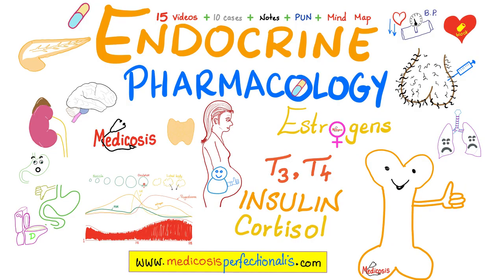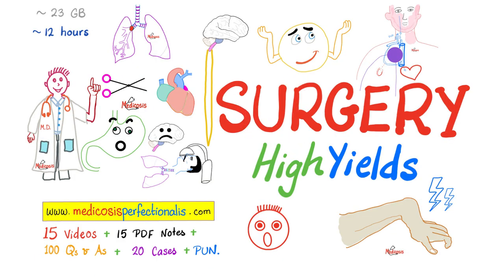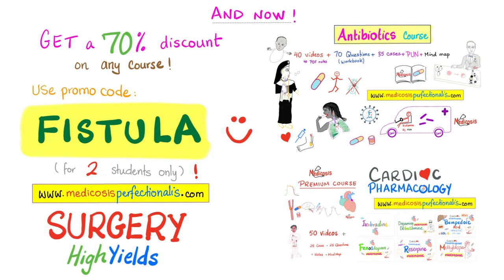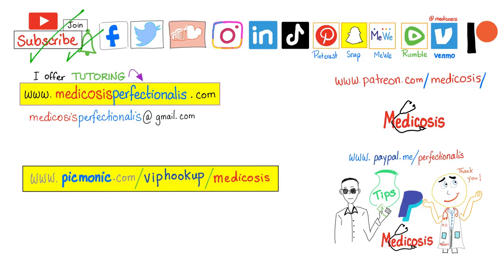Real estate agents say: location, location, location. But Metacosis says: integration, integration, integration. After understanding the physiology and biochemistry behind insulin, it's time to learn about insulin and oral glucose-lowering agents like metformin by downloading the endocrine pharmacology course at metacosisperfectionalis.com. There is also a course about kidney physiology with 10 videos, and a surgery high-yields course with 15 videos, notes, cases, and 12 hours of content. Use promo code FISTULA for a 70% discount, or TOXIDROME for 40% off. Please subscribe, hit the bell, and click the join button. Be safe, stay happy, study hard — this is Metacosis Perfectionalis, where medicine makes perfect sense.